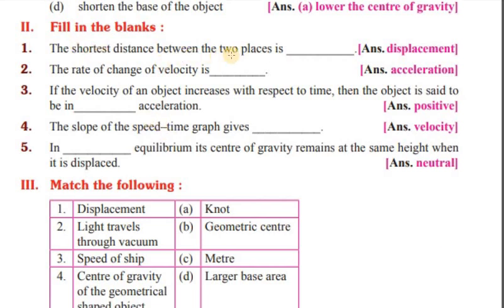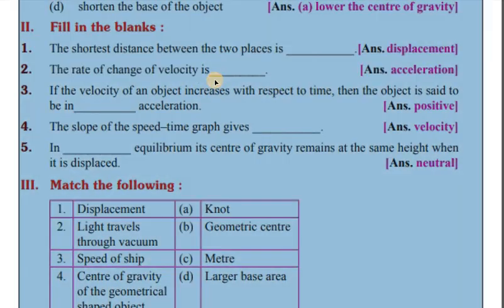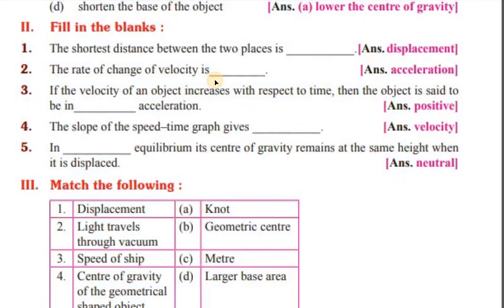The shortest distance between two places is called displacement. The rate of change of velocity is acceleration.